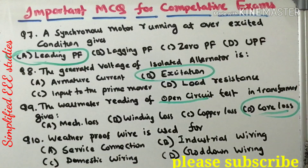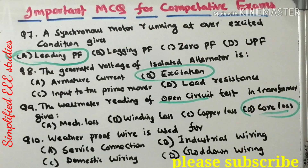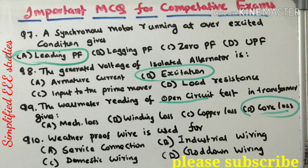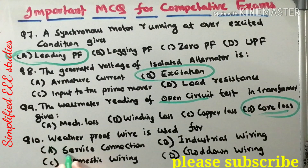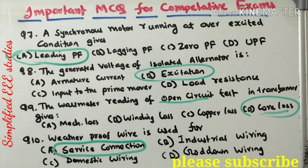Question 10: weatherproof cable is used for — service connection, industrial wiring, domestic wiring, or go-down wiring. Service connection is the connection between the end of the utility main and the beginning of the customer side. The service connection should be weatherproof, so the best answer is option A: service connection. Thanks for watching this video — please share and don't forget to subscribe.